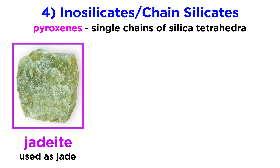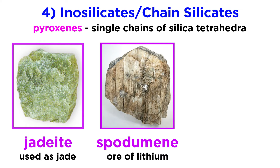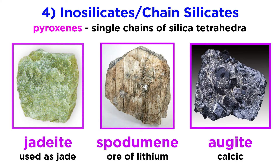Gemstone-quality jadeite is used as jade, and spodumene is an important ore of lithium. The most abundant pyroxene is augite, which is a calcic pyroxene with an intermediate composition.